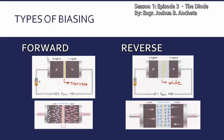Sa forward bias condition, it allows the flow of electrons. While sa reverse bias condition, it blocks the flow of electrons, pero may mga nakakalusot na minimal amount of electrons na tinatawag nating leakage current or reverse current.